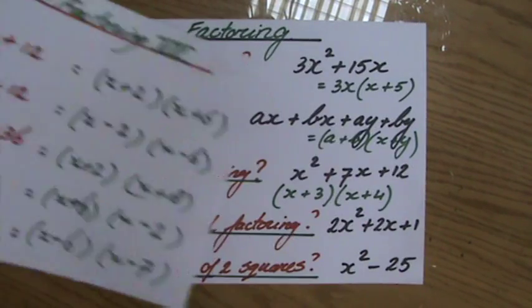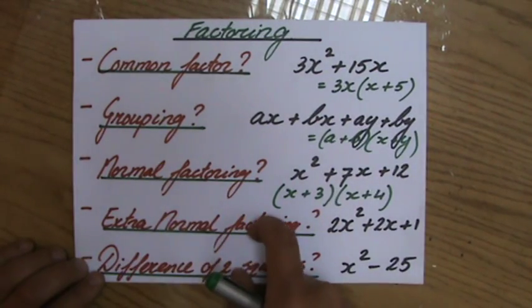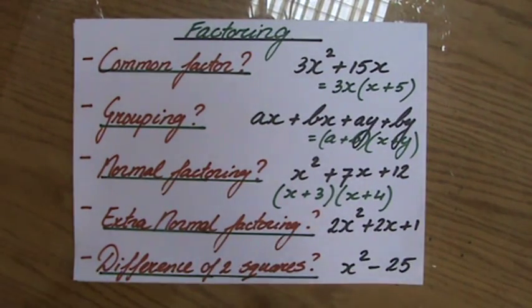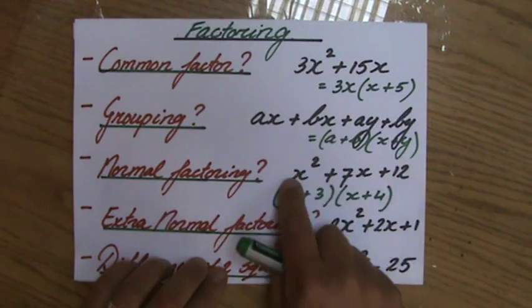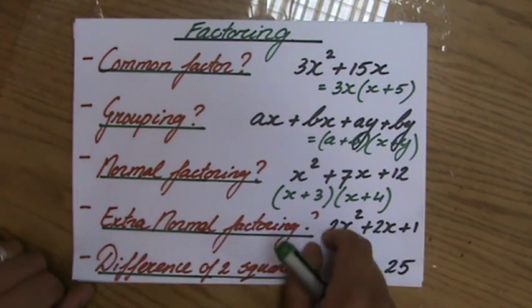Okay. So go to the next video where we are going to do some extra normal factoring. I call that extra normal factoring because it looks the same as what we've just done. But now the coefficient is not one of the x squared. Bummer. I'm going to show you how to do it. See you there.